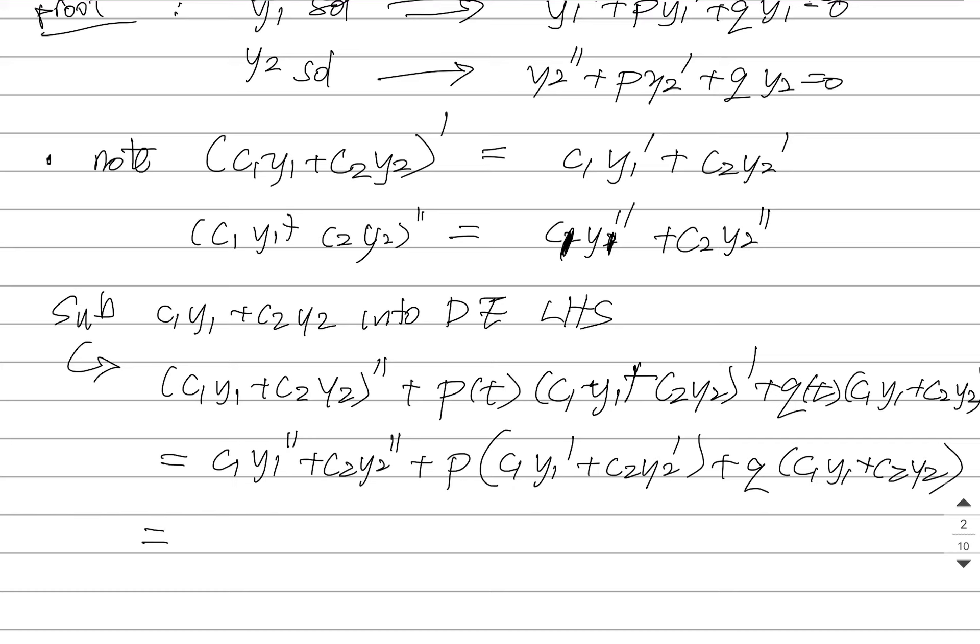I can then reorganize this. I can group everything that has a Y1. I can put them all together and I'll get C1 Y1 double prime, P Y1 prime, Q Y1.